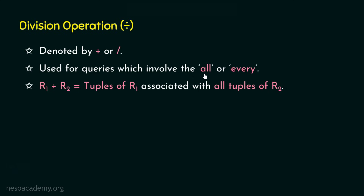Just recollect that key word: 'all.' When we see examples, it will be clear. Is there any rule or condition for when R1 divided by R2 is possible? R1 divided by R2 is not always possible — even in regular mathematics, division is not always possible. For example, what if the denominator is zero? So obviously there will be some conditions for R1 divided by R2 to be possible.